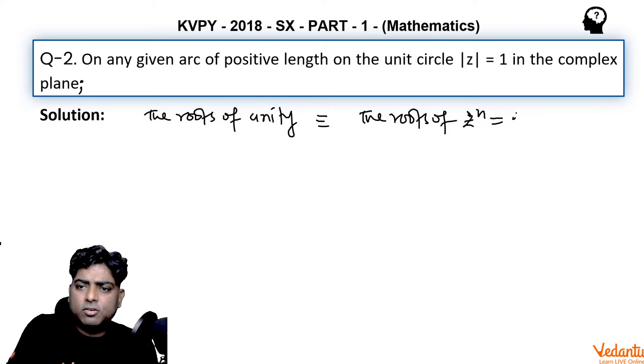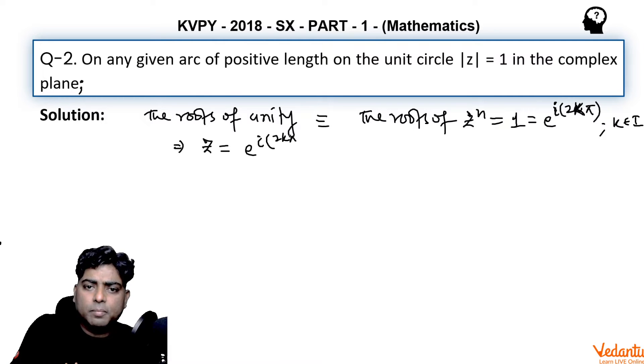One can be written as e raise power iota 2k pi. This equals cos 2k pi plus iota sin 2k pi. Cos 2k pi is one and sin 2k pi is zero, where k is some integer.